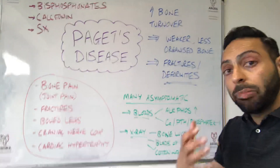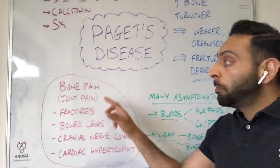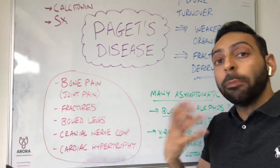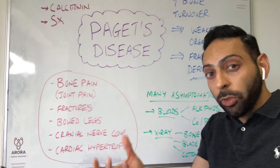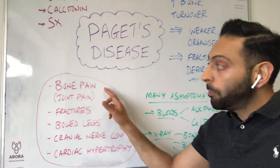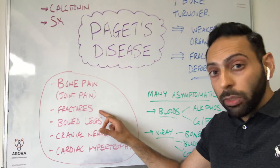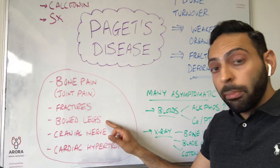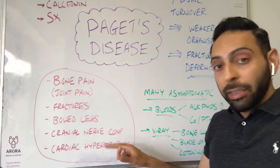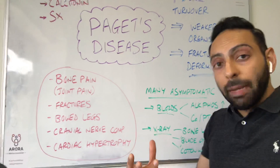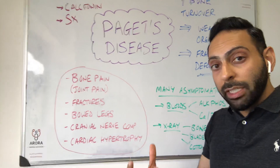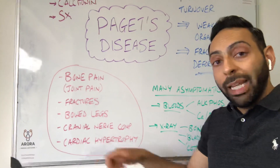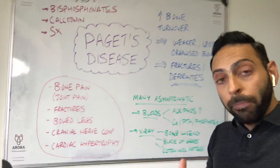However, if people do present with problems, bone pain is the commonest presentation, as well as joint pain if the disease is happening near a joint. You can also present with fractures, bowed legs is a key thing to remember, cranial nerve compression — things like deafness can happen — and also cardiac hypertrophy due to increased bone blood flow.